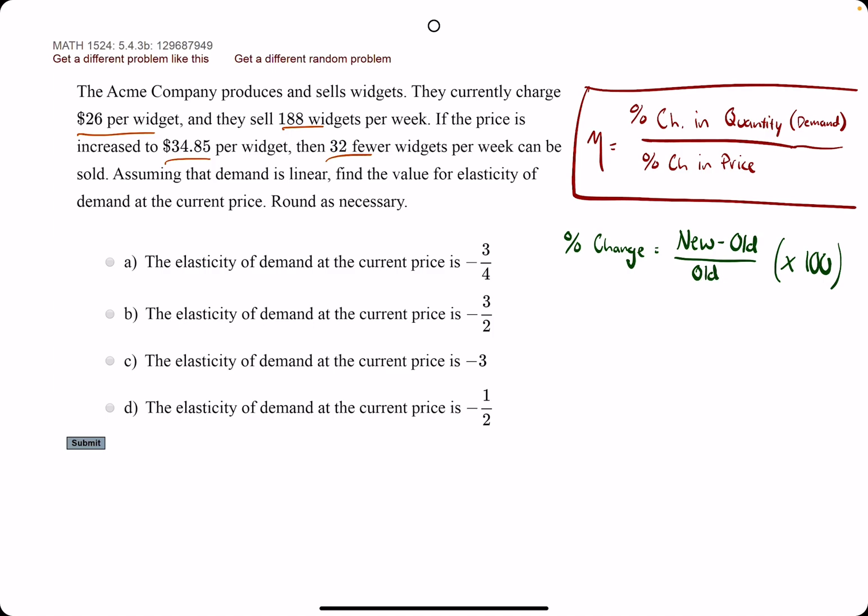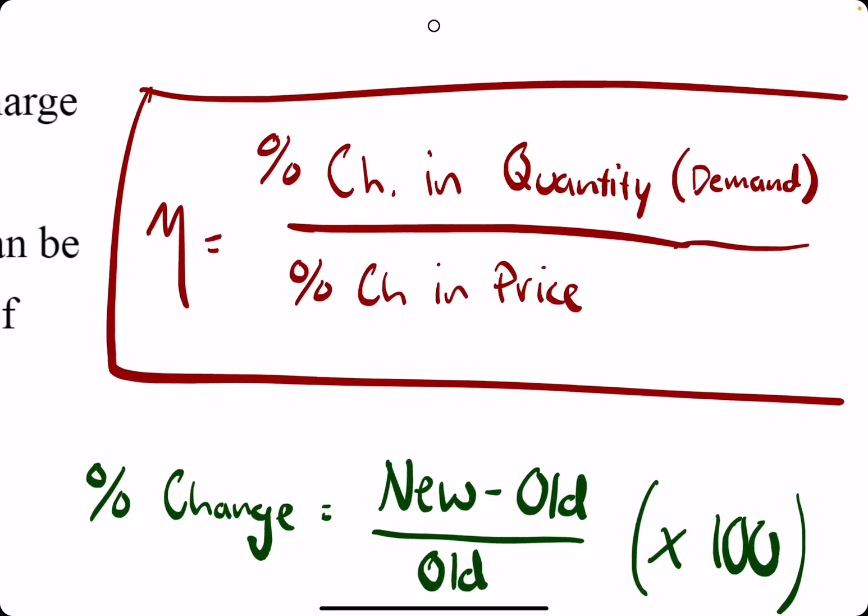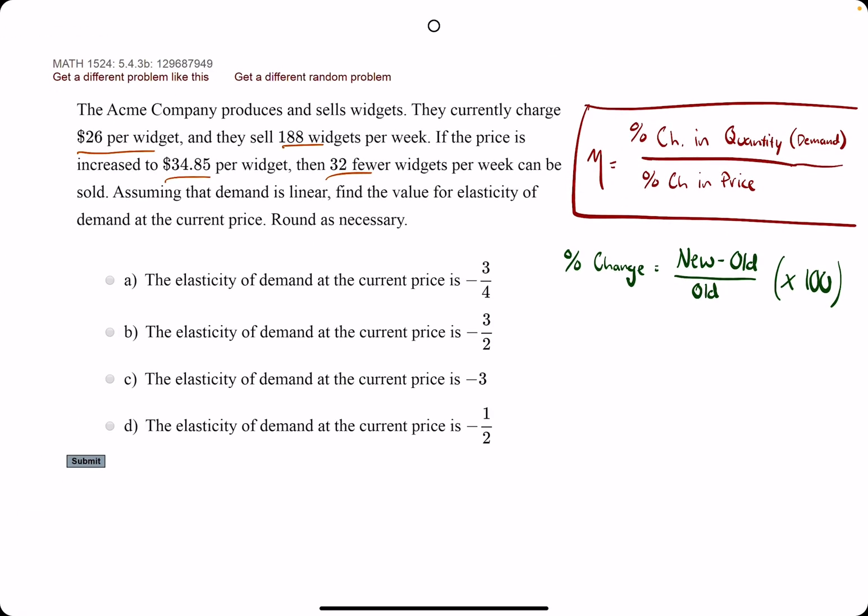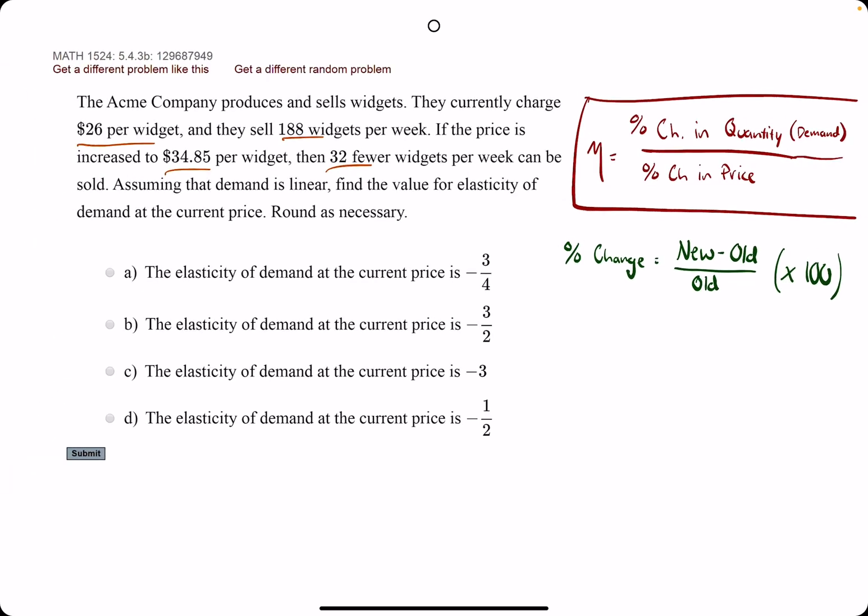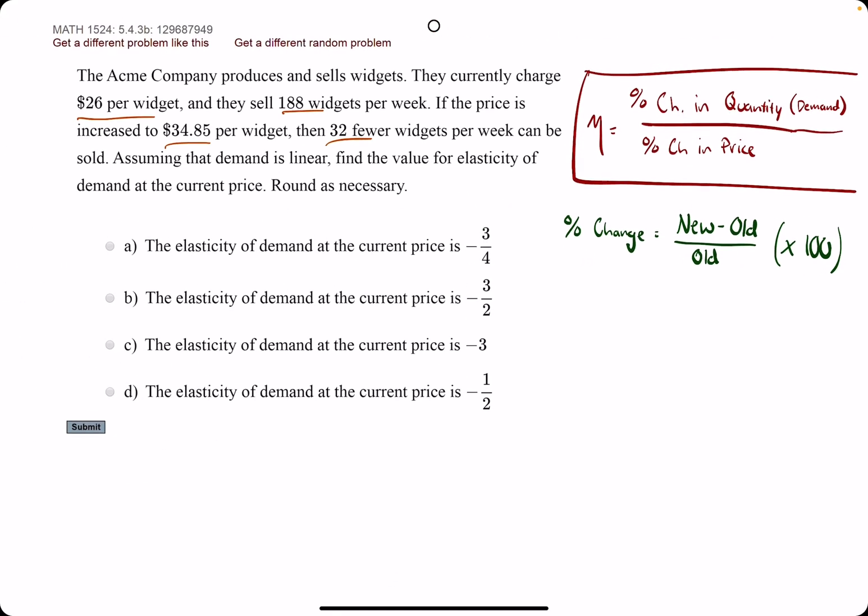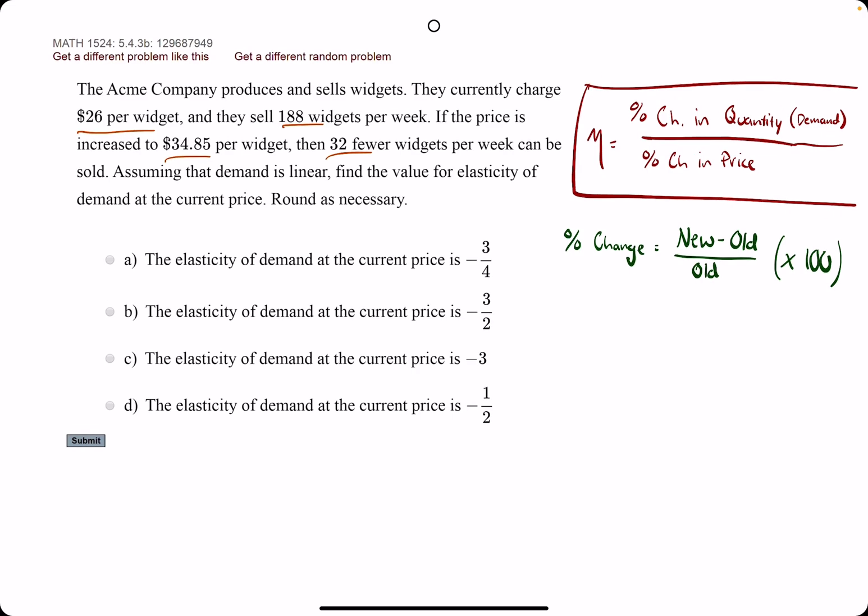So we are asked to find the elasticity for which we are going to use this equation: percent change in quantity or demand over percent change in price. It'll help if we know percent change is new minus old divided by old, and then we can multiply by 100 to get a percentage if we want.